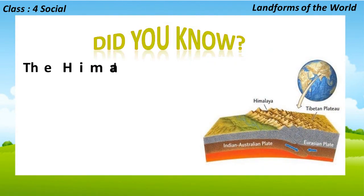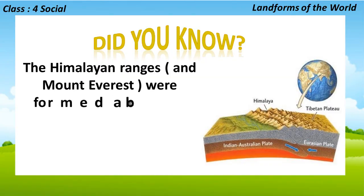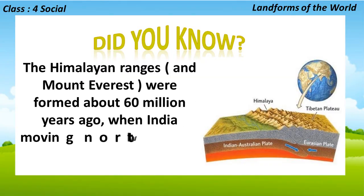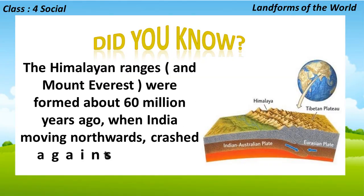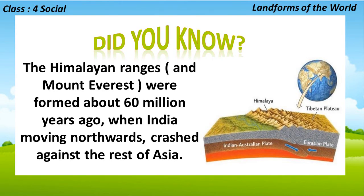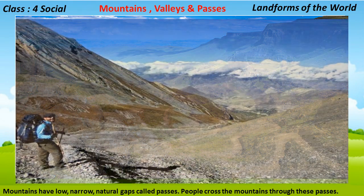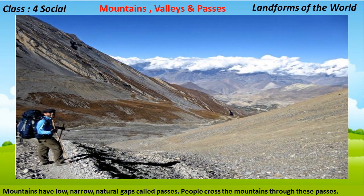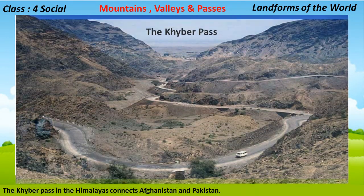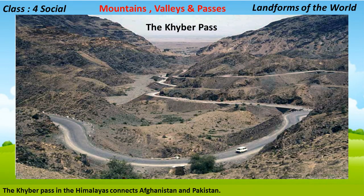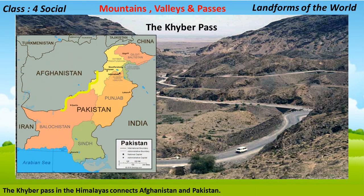Did you know? The Himalayan ranges and Mount Everest were formed about 60 million years ago when India, moving northwards, crashed against the rest of Asia. Mountains have narrow natural gaps called passes. People cross the mountains through these passes. The Khyber Pass in the Himalayas connects Afghanistan and Pakistan.